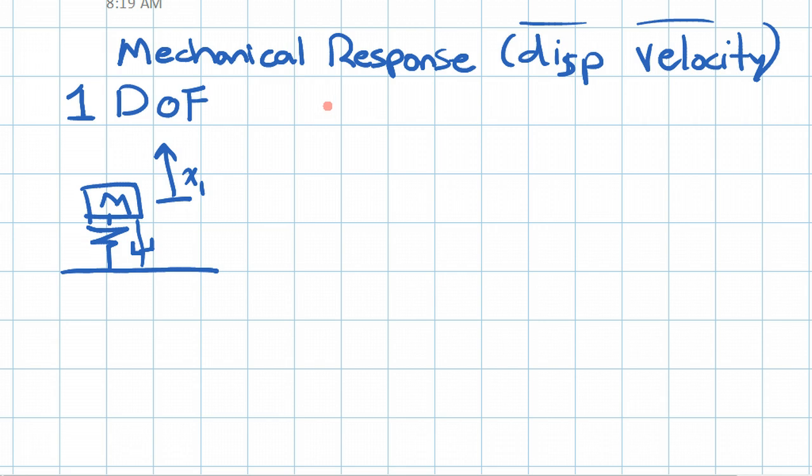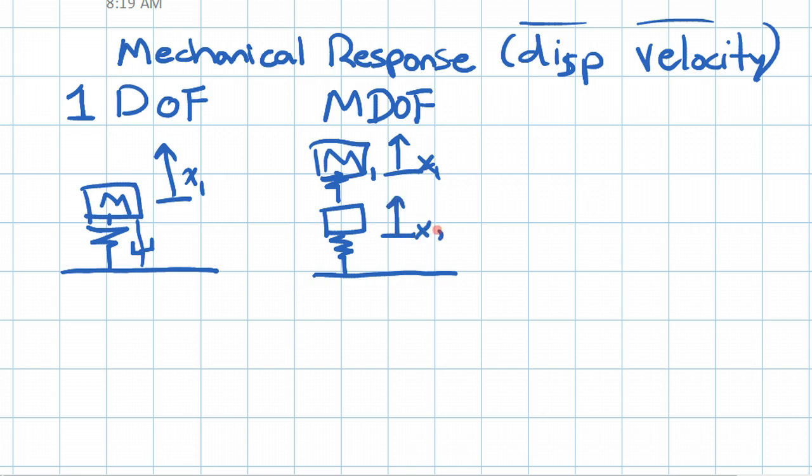However, we can also make more complicated systems by connecting mass-spring-damper systems together. We have our spring just like before, but we have multiple masses. You can imagine the displacement of x1, let's call this mass 1, is not necessarily the same as the displacement of x2, although they're related by the spring in the middle.